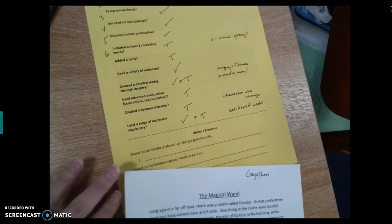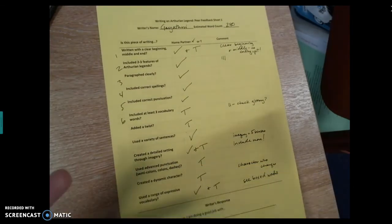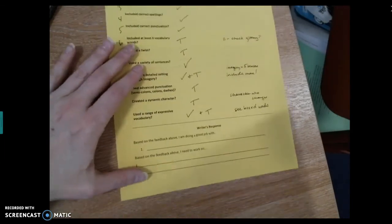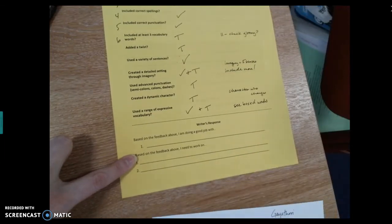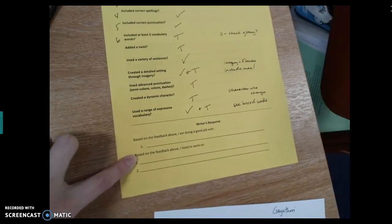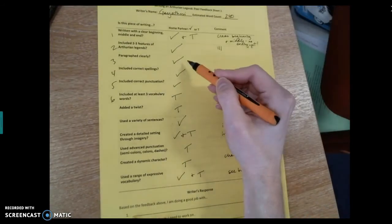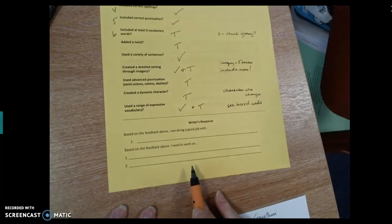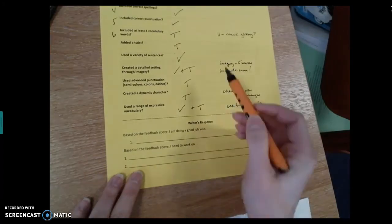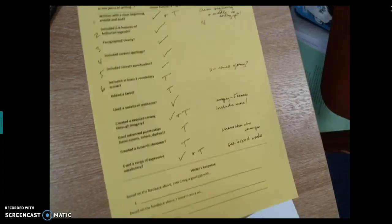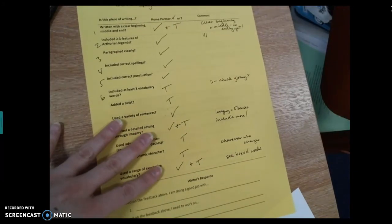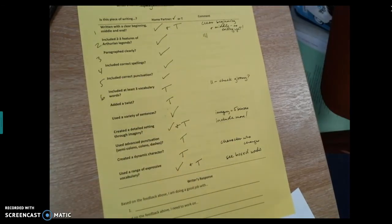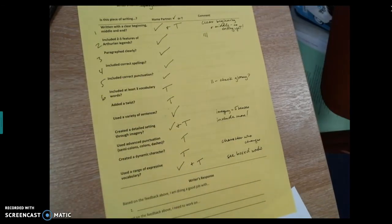Okay. So now as a home reader, my job is done. I've filled in the sheet and I've given her some really clear feedback. Gayathri then can fill in this bit, writer's response. Based on the feedback above, I'm doing a good job with. And we can see that she's done a really good job with her paragraphing and her spellings and punctuation. Then it says, based on the feedback above, I need to work on, and she can choose two things that she wants to work on. She's got lots of T's here, especially in this more advanced section. She doesn't have to do all of those. She can just think about what are the two most important versions of that that I want to work on. Okay. So once Gayathri's done that, then it's time for her story to go to her away partner.